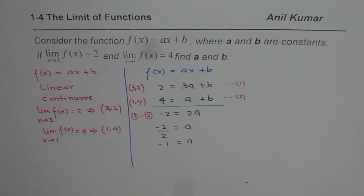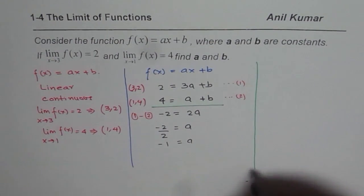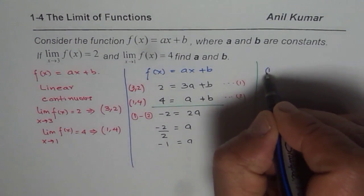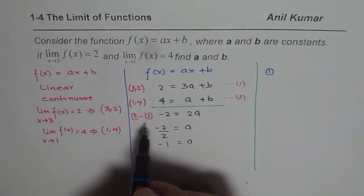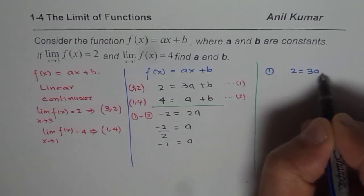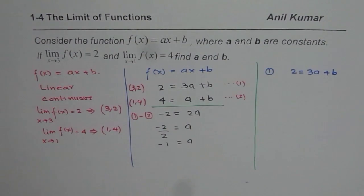Once we get the value of a, we can find what b is. We can use any one of these two equations. So let us use equation 1, which is 2 equals 3a plus b. Now in this equation, we will substitute a equals minus 1.